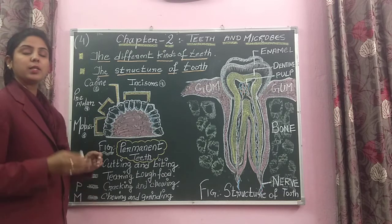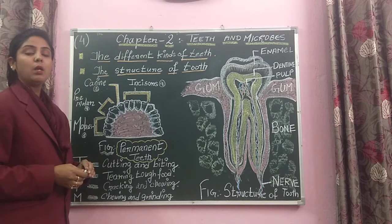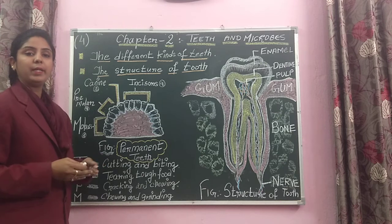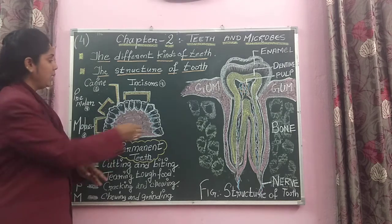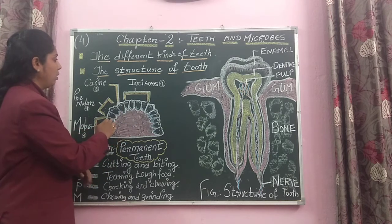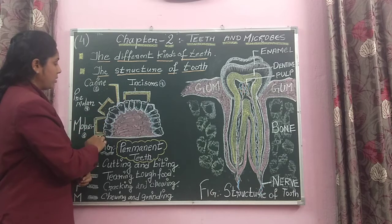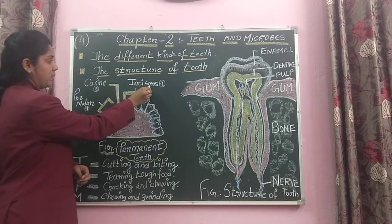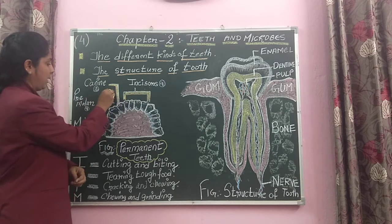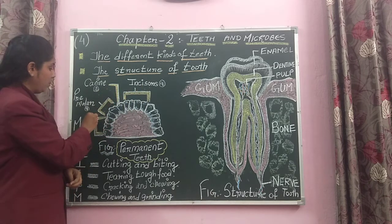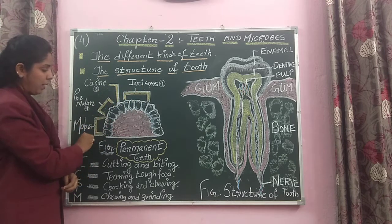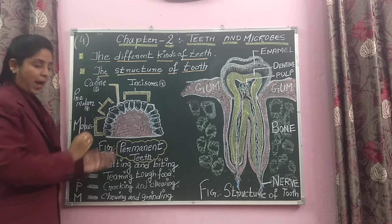So, students, in the upper jaw there are 4 different kinds of teeth: incisors, canines, premolars, and molars — each with their specific functions.